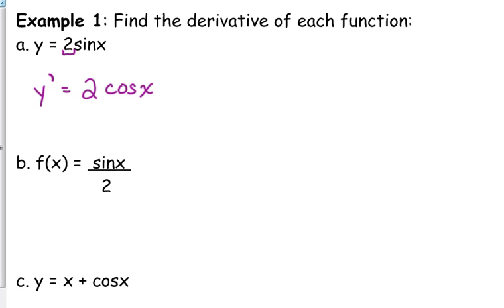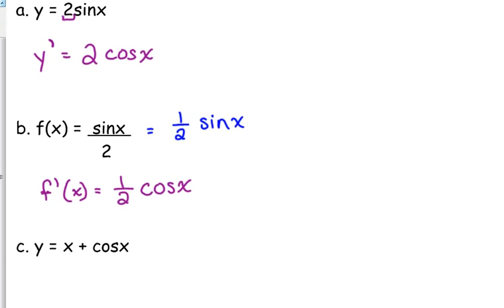B, if my function, f of x, is equal to the sine of x over 2. Now, divided by 2, it's a little weird. That's not really a constant multiple. That's a division problem. So, let's just fix that. I'm going to rewrite that as, that's the same as 1 half sine of x. Sine of x over 2 is the same thing as 1 half sine of x. So, 1 half is our constant multiple. So, the derivative of that is simply 1 half cosine of x.